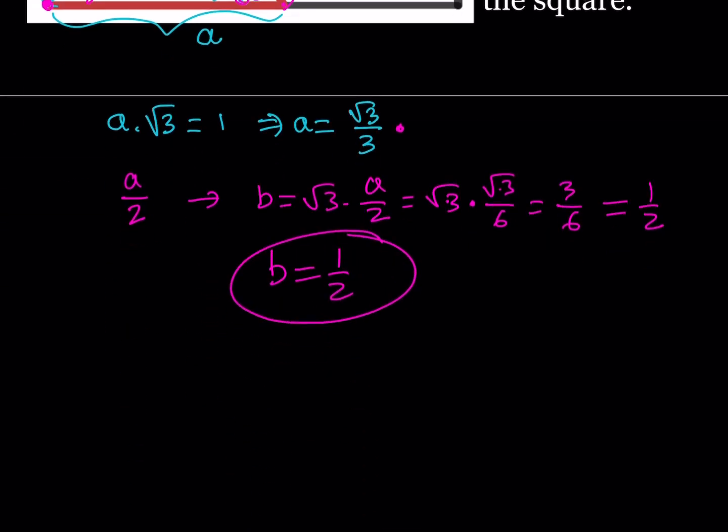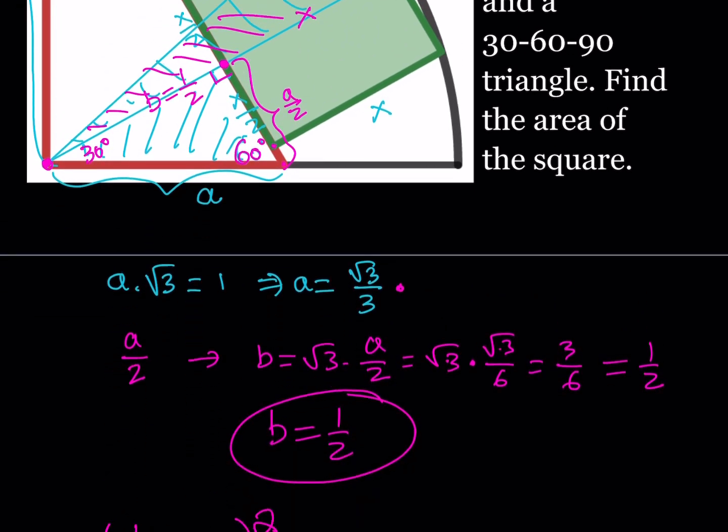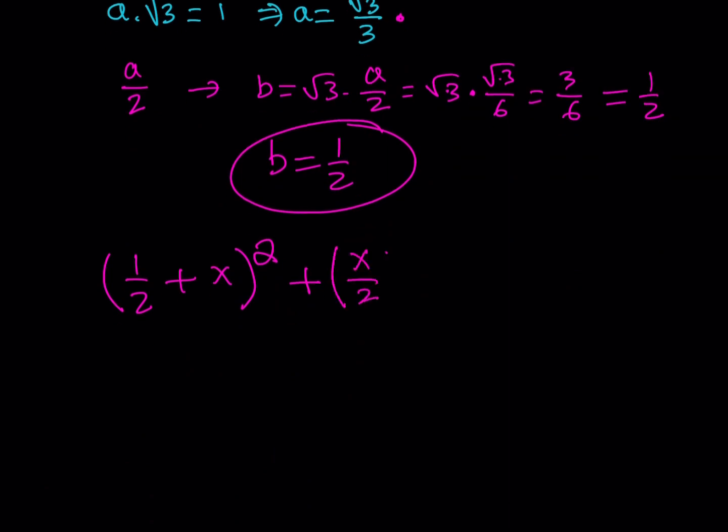So here we go. We have 1 half plus x squared plus half of x squared. Remember, the height is half of x. Half of x squared. And the radius squared is 1. Great. So we do have a quadratic equation. We can solve this. Well, we've solved some quartic equations, some quintics, some haptics, so on and so forth. Was it haptic or septic? I think it was septic. Anyways. What do we do with this? We're going to square this. So it's going to give us 1 fourth plus 2ab is going to give us x plus x squared plus x squared divided by 4 is equal to 1.